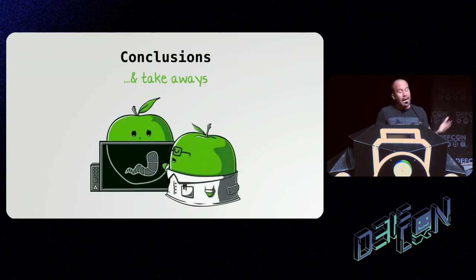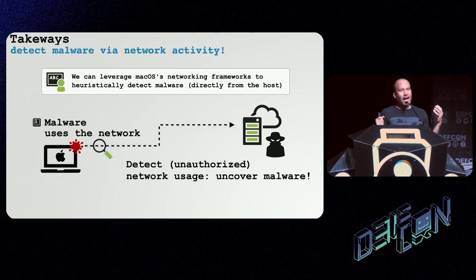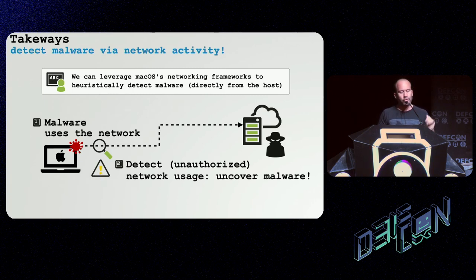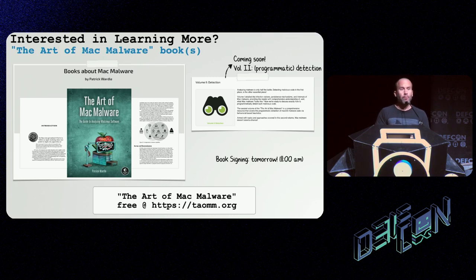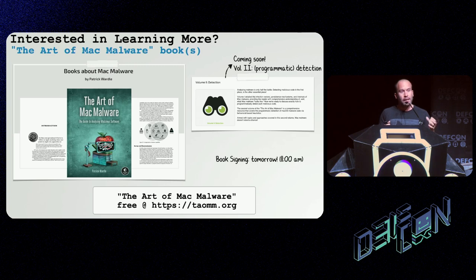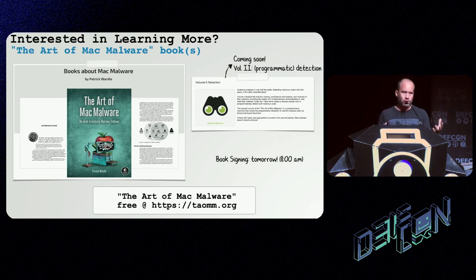Alright, let's conclude. Hopefully I've illustrated that by leveraging macOS's networking frameworks, we can heuristically detect malware directly from the host. This is based on the very keen observation that malware uses the network, and so if we can detect this unauthorized activity we can uncover malware. If you're interested in learning more, I've written a book on analyzing Mac malware — it's 100% free on taomm.org for the Art of Mac Malware. I'm also writing another volume about programmatic detection — think this topic plus many more, also free. I'm going to be doing a book signing tomorrow on volume one at the No Starch Press table at 11 AM — if you want to pick up a copy or have me sign it, stop by and say hi.